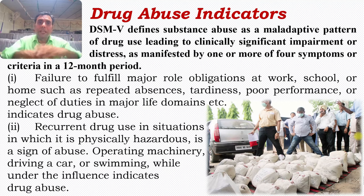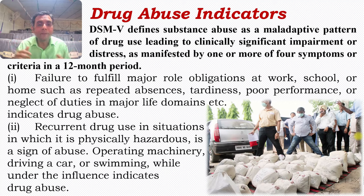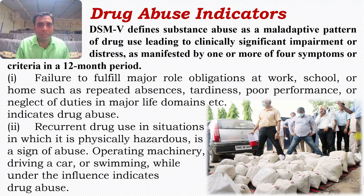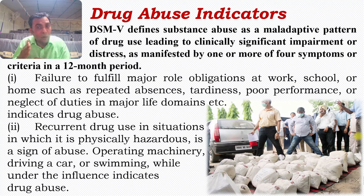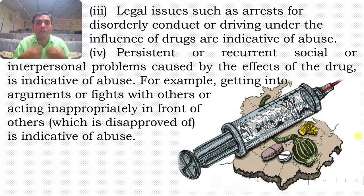The four DSM-5 criteria are: first, failure to fulfill major responsibilities and obligations across life domains — professional life, school, home, family, and social domains; second, recurrent drug use in physically hazardous situations such as operating machinery, driving a vehicle, or swimming; third, entanglement with the legal system such as arrest for disorderly conduct or driving under the influence of a drug or alcohol.